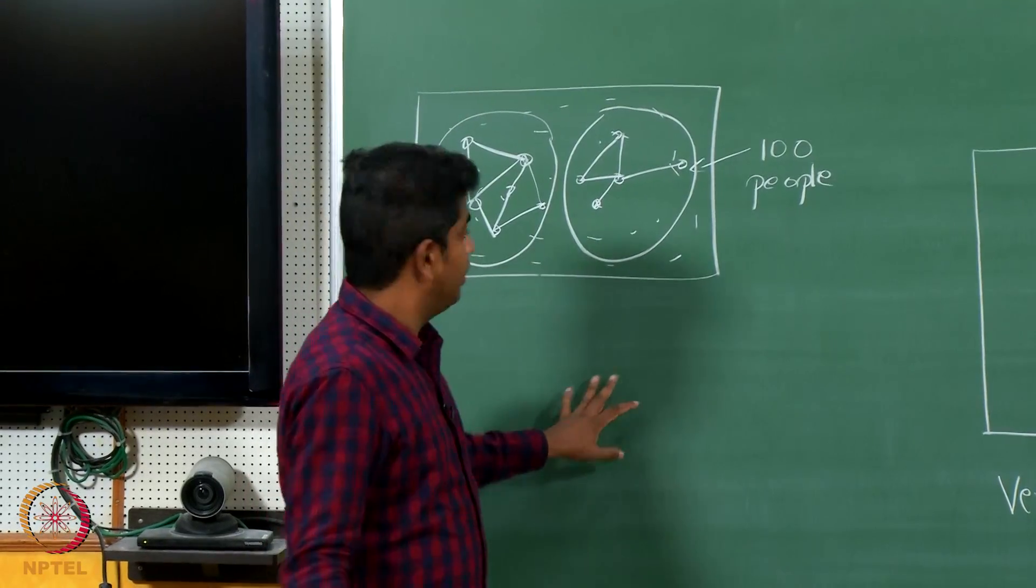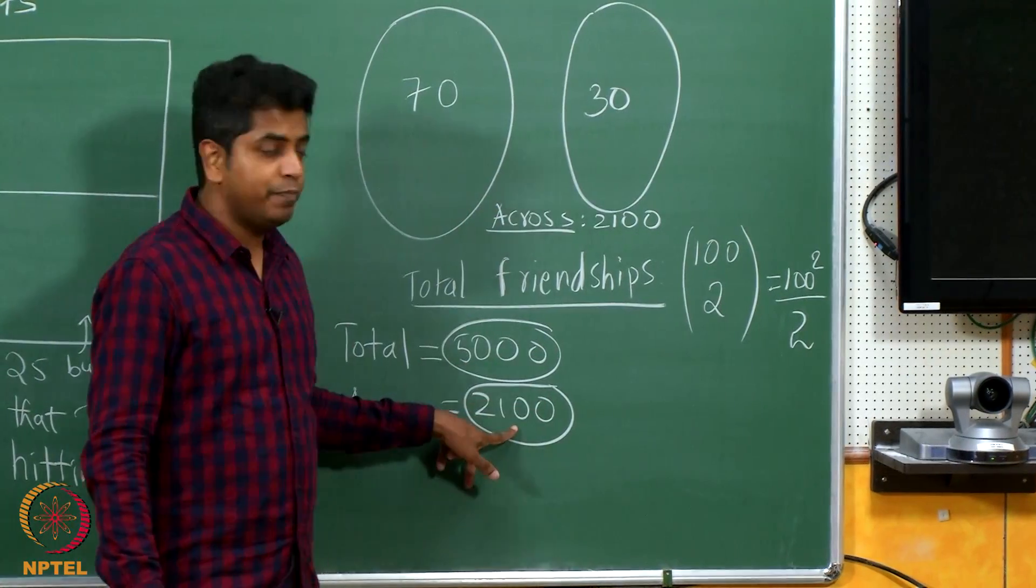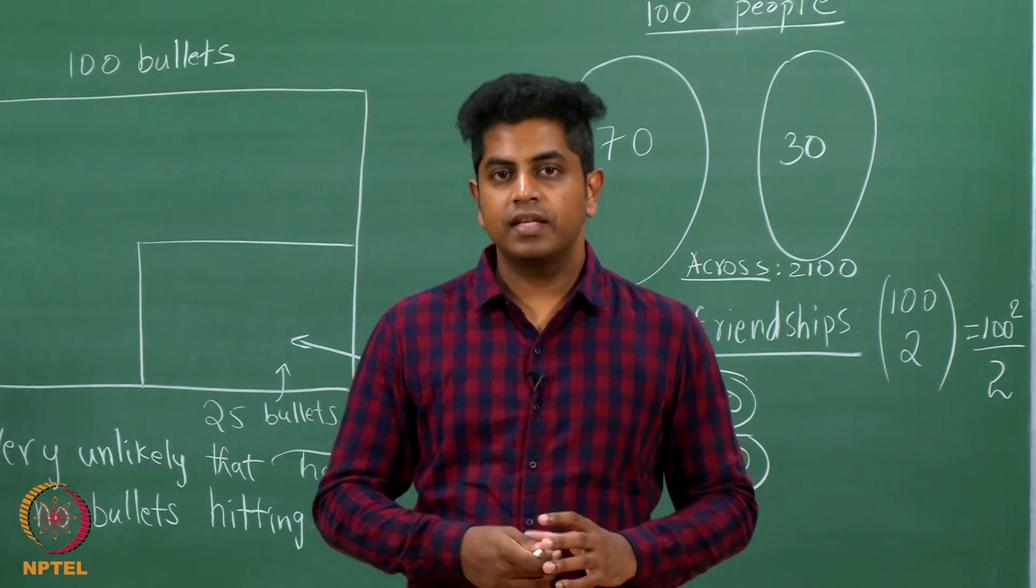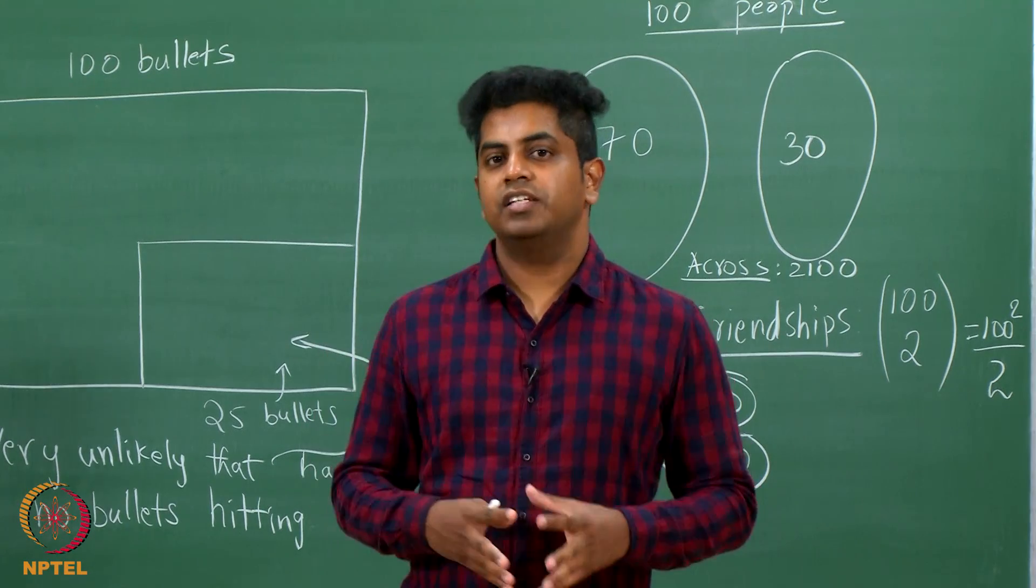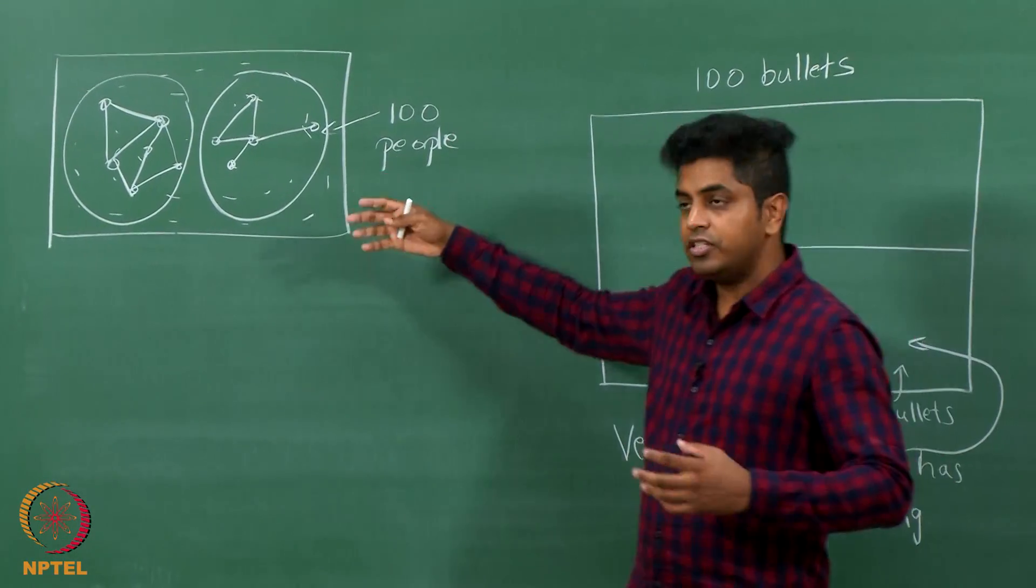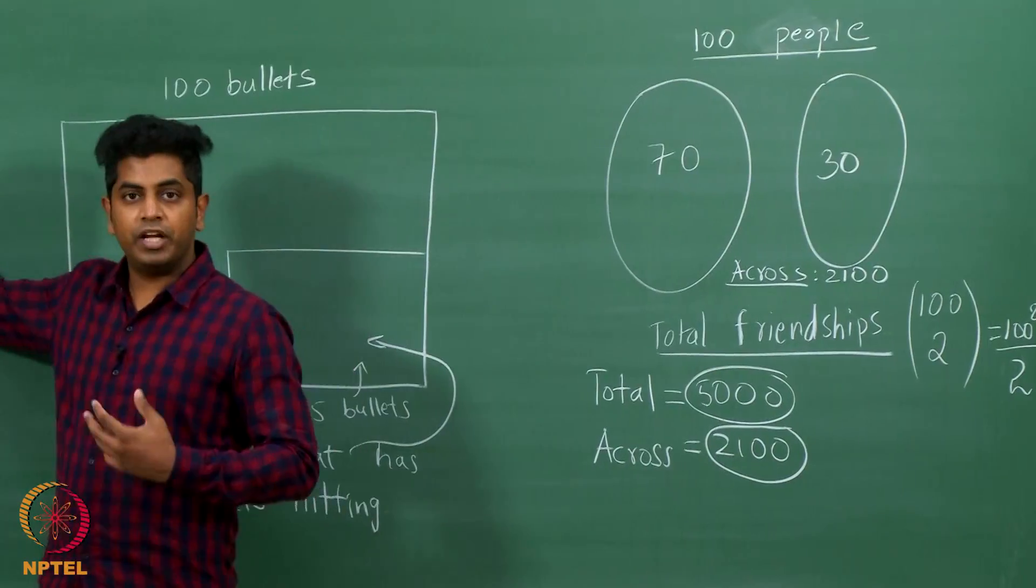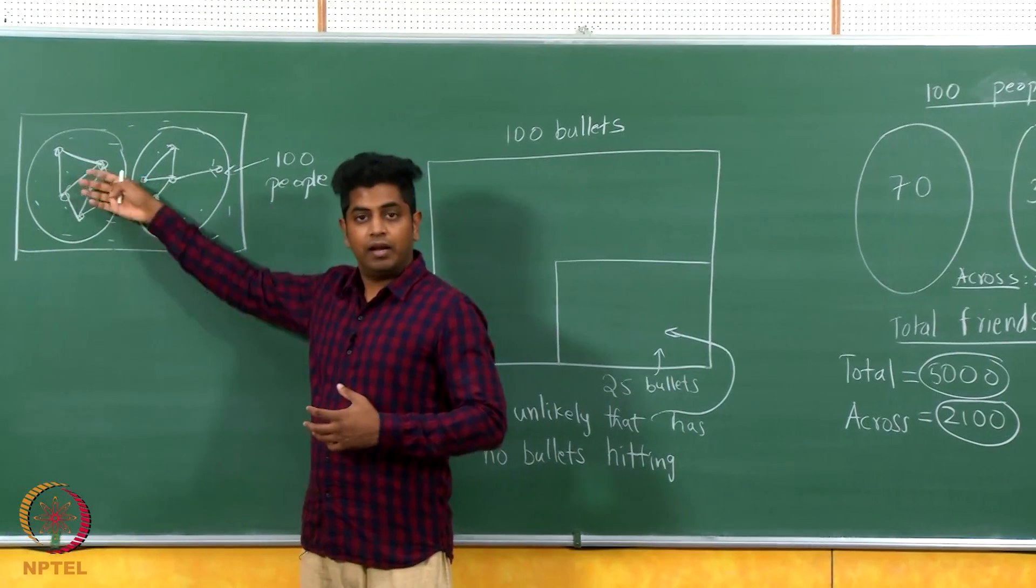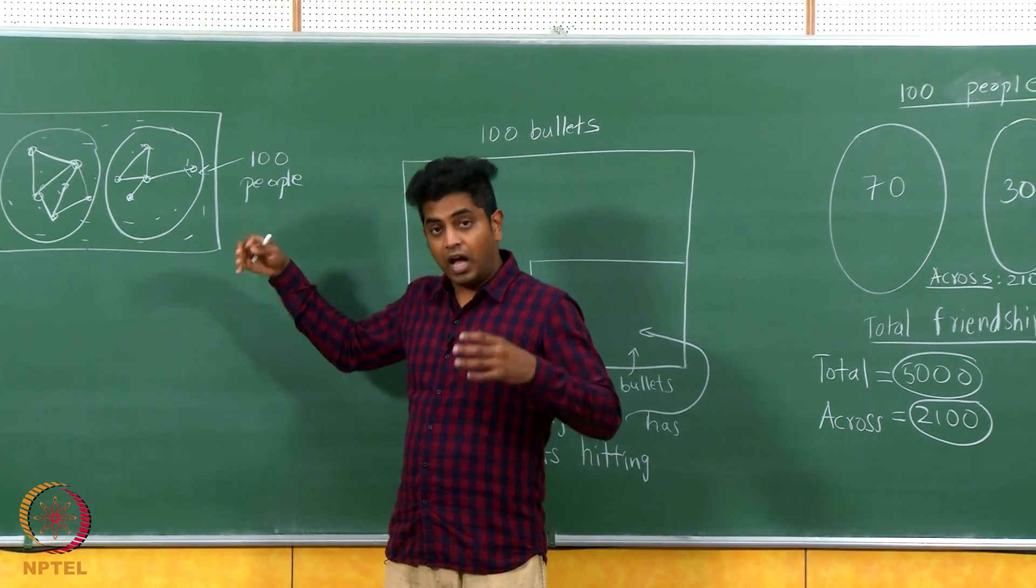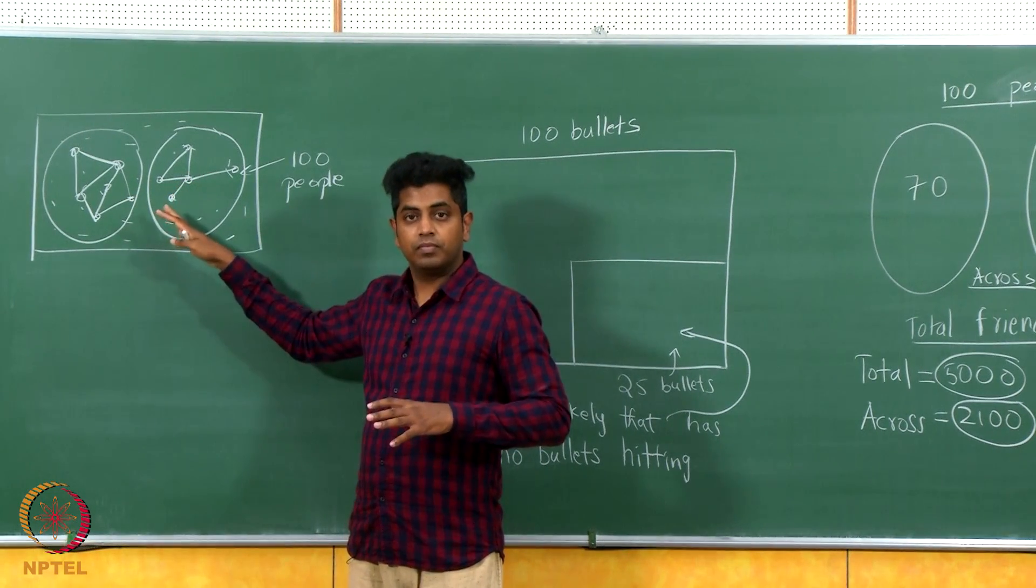If you take a bunch of 100 people and look at friendships, it is very unlikely that there are no friendships across because there are a whole lot of possibilities for that to happen and you are saying none of these possibilities happened. So let me connect the analogies properly. When you start putting a lot of edges, it is as good as you choosing the edges. Out of 5000 edges, you are choosing some edges. Half the edges are across between, and when you are choosing, none of these edges are chosen.